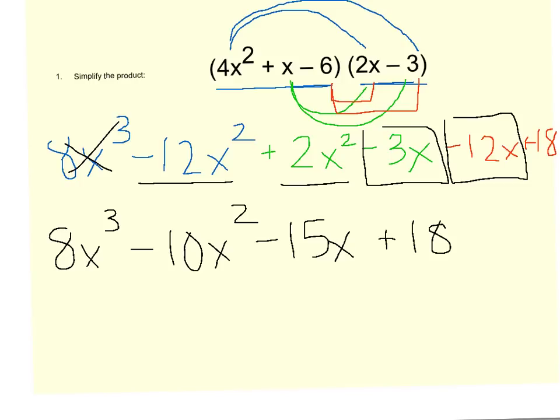Now all my like terms are combined, and I have an answer in standard form with exponents of 3, 2, 1, and my constant.